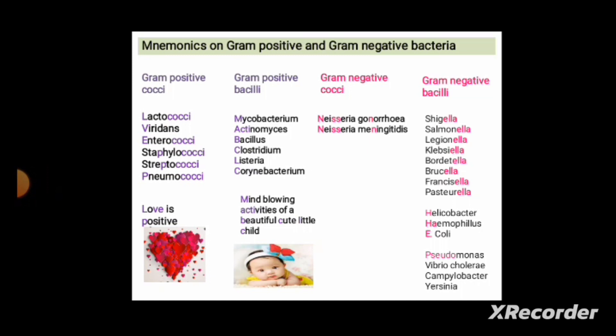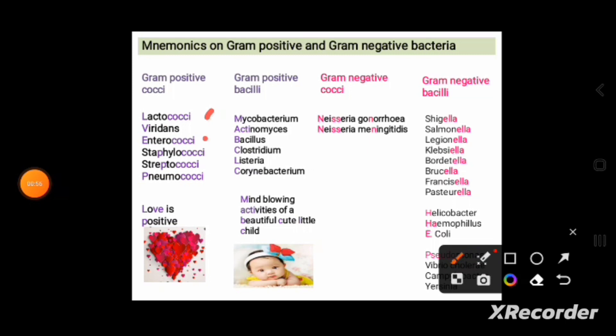If the genus name of the bacteria ends with 'cocci,' then in most cases the bacteria are gram-positive cocci. For example: Lactococci, Enterococci, Staphylococci, Streptococci, and Pneumococci — all end with 'cocci' and are gram-positive cocci. There is an exception: Meningococci ends with 'cocci' but is gram-negative. Another exception is Viridans, which is gram-positive cocci but does not end with 'cocci.'